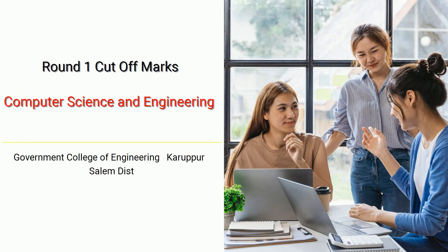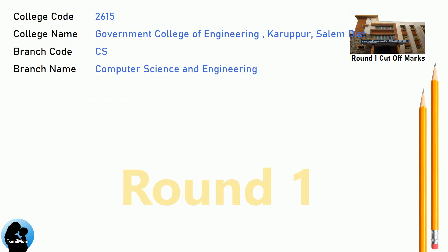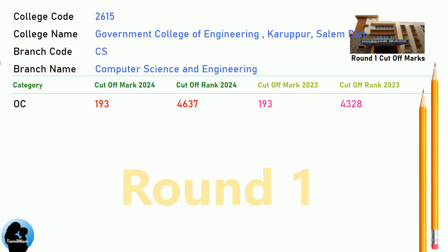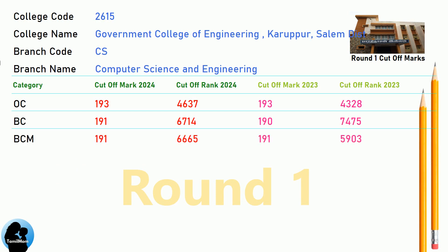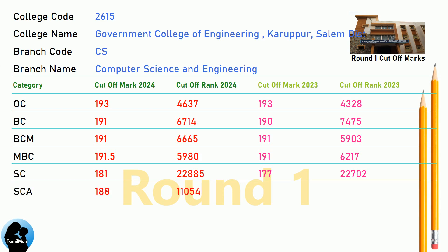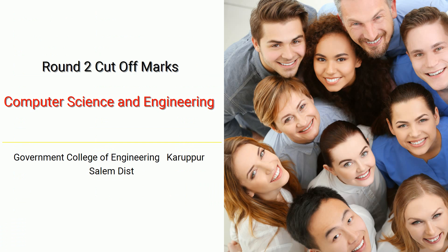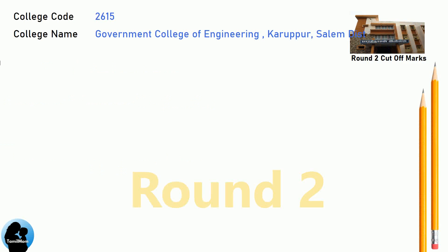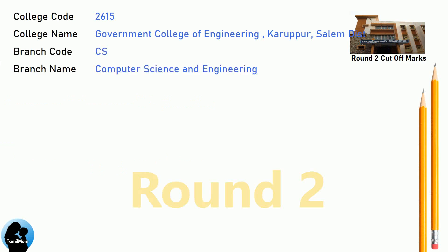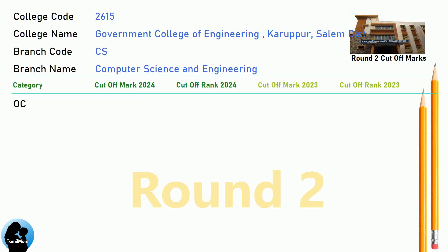DNA Round 1 Cut-off for Government College of Engineering, Karupur, Salem District in Computer Science and Engineering. DNA Round 2 Cut-off for Government College of Engineering, Karupur, Salem District in Computer Science and Engineering.